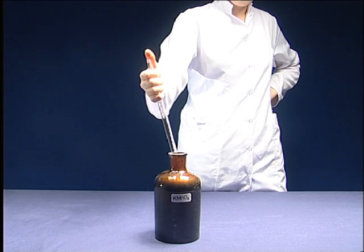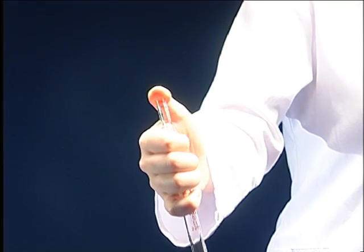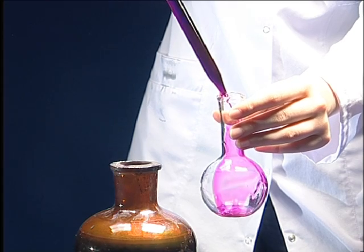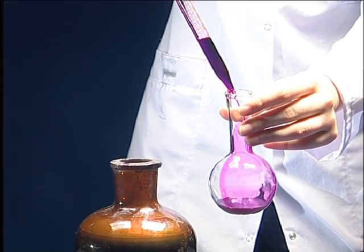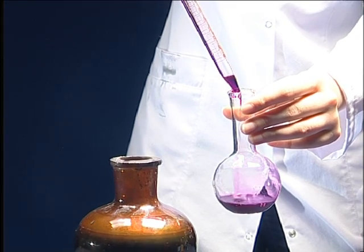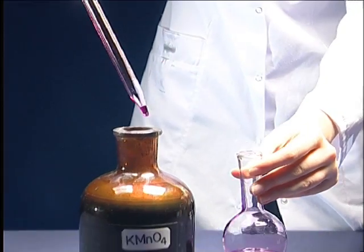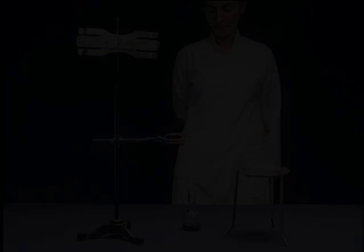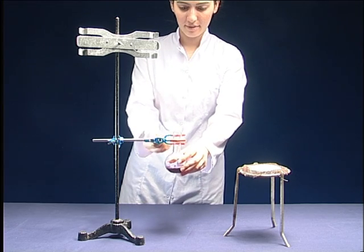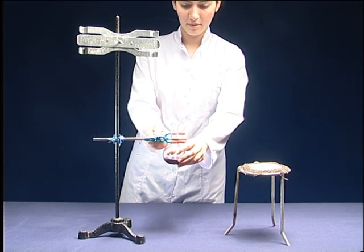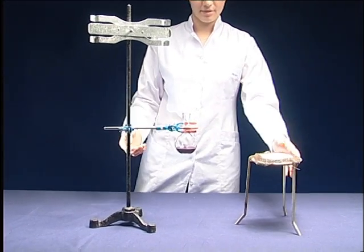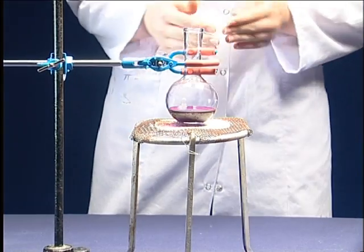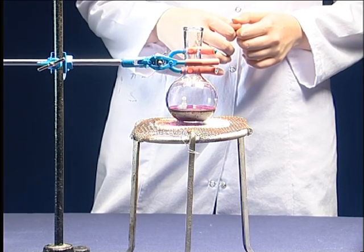Pour 20ml potassium permanganate solution into 100ml Florence flask with the help of a pipette. Attach the flask to the tripod with the clamp. Put the wire gauze under the flask to avoid heating the solution directly. Do not pack the clamp too much in order not to break the flask.